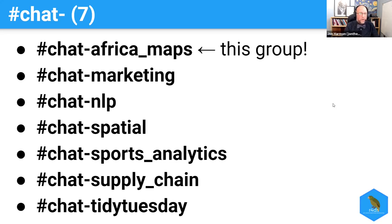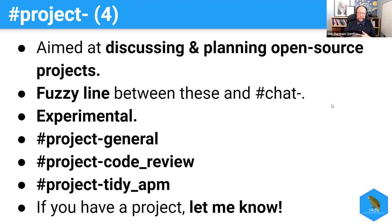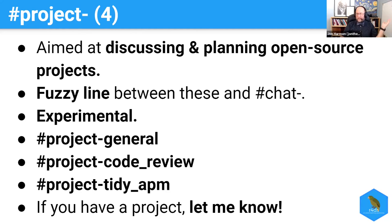Our final category is the project channels. The idea is to discuss and plan open source projects — there's a very fuzzy line between them and chat, and it's possible these project channels will disappear and merge into chat. We have a general project channel, a code review channel that had some interest but has fallen off, and a project to make a tidy models version of Max Kuhn's book Applied Predictive Modeling. If you have a project, let me know and we can look into whether it fits in chat or projects.